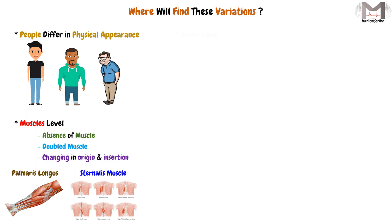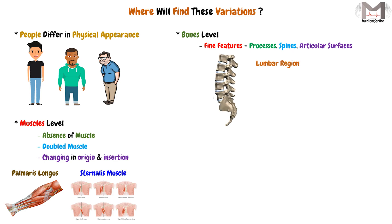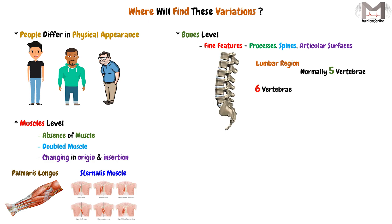We also have variations at the bone level, including differences in the fine features of bones such as their processes, spines, and articular surfaces. For example, in the vertebral column, specifically in the lumbar region, we normally have 5 vertebrae, but in some people we may find 6, and in others, 4.